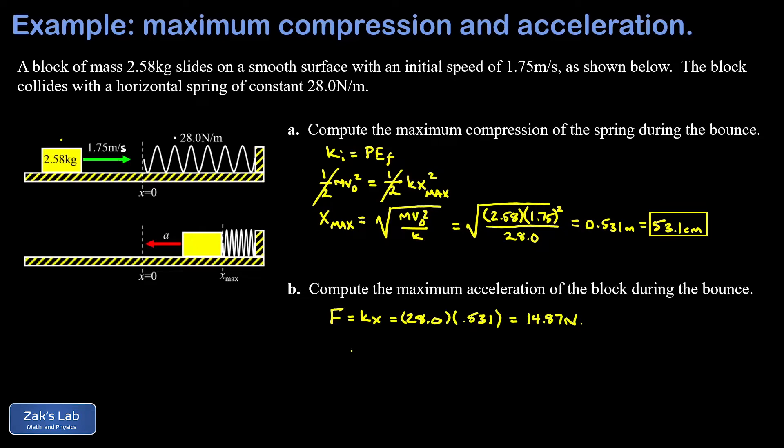There are no other horizontal forces on the block, so applying Newton's second law is very simple here. There's just one force that we're concerned with. I write down a equals F over m, Newton's second law. The force experienced by the block pointing to the left is 14.87 newtons and the mass of the block is 2.58 kilograms. To three significant digits I get an acceleration of 5.76 meters per second squared.